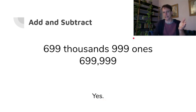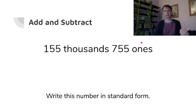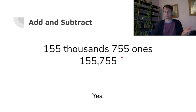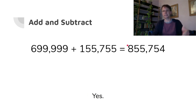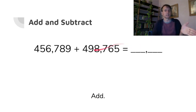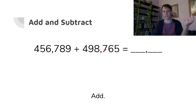And then one hundred fifty-five thousand seven hundred fifty-five ones — this is called unit form because it's saying what units are in the place value chart. Standard form is very similar. Now add those together — you should get eight hundred fifty-five thousand seven hundred fifty-four. Here's another one: adding four hundred fifty-six thousand seven hundred eighty-nine plus four hundred ninety-eight thousand seven hundred sixty-five.